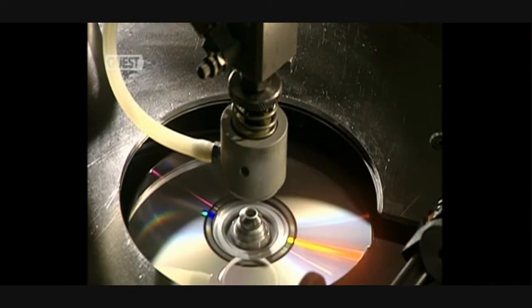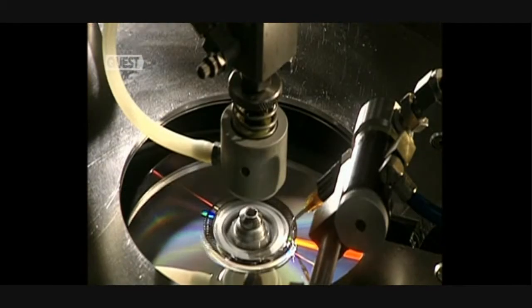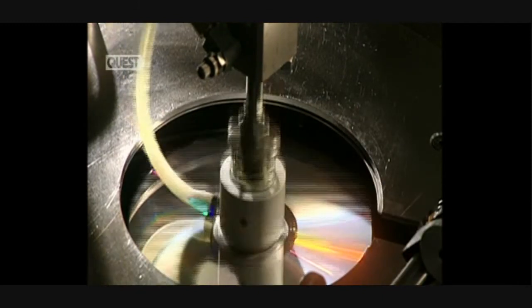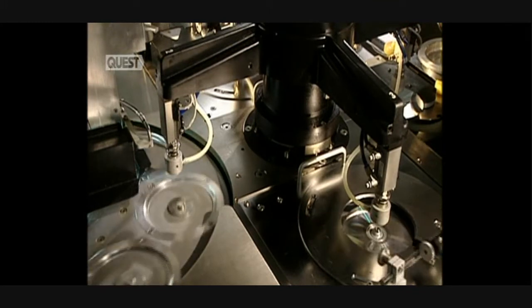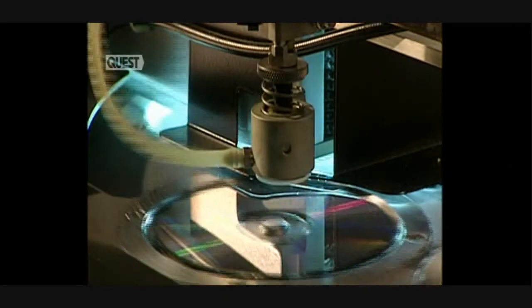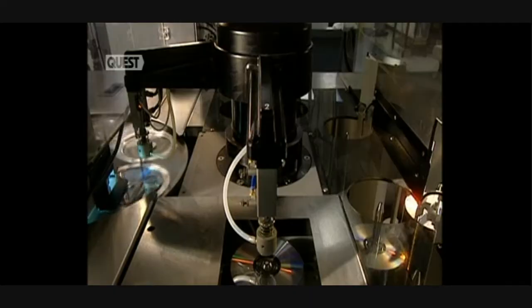Protecting the surface of the disc is essential, so a coat of varnish is applied, which also allows the silkscreen design to stick well to it. Ultra-violet lamps quickly dry the varnish.